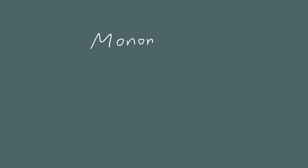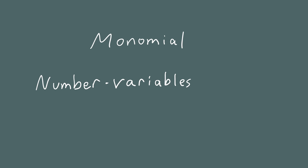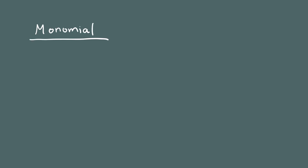A monomial comes in two flavors. The first is a number times some variables where each variable is raised to a positive integer power. The second type of monomial is simply just a number. Now let's look at some examples of things that are a monomial and things that are not a monomial.